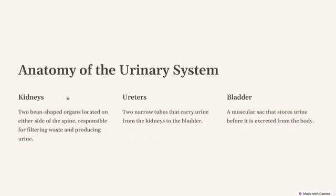Starting with the anatomy — the kidneys are two bean-shaped organs located on either sides of the spine, responsible for filtering waste products and producing urine. Please check my video on kidney anatomy and physiology linked in the description. As a key recap: each kidney has approximately one million functional units called nephrons, which are responsible for filtering the blood and producing urine.